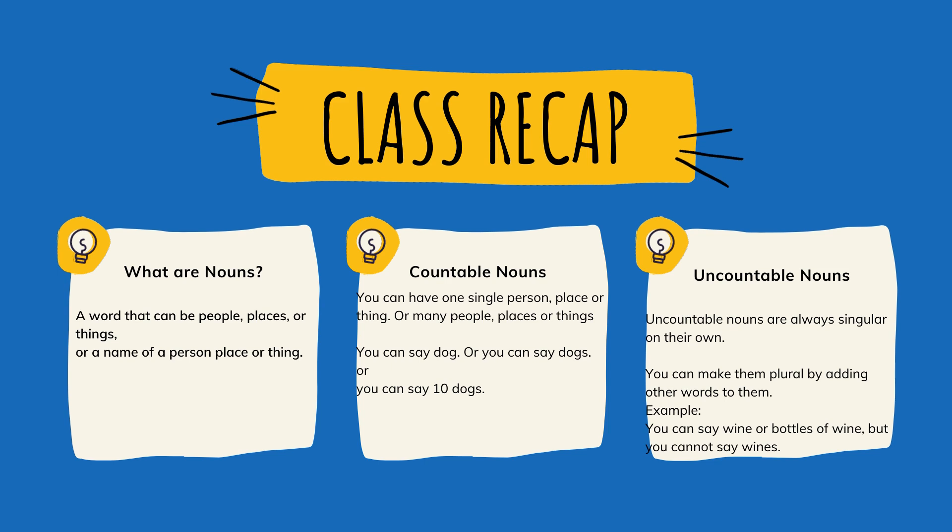Here's the class recap. What is a noun? A noun is a word that can be people, places, or things, or the name of a person, place, or thing. A noun can be a subject of a sentence or an object of a sentence. Countable nouns: you can have one single person, place, or thing, or many people, places, or things. Countable nouns can be singular or plural — you can say dog, dogs, or ten dogs. Uncountable nouns are always singular on their own. You can make them plural by adding words — for example, you could say wine, or bottles of wine, but you cannot say 'wines'. That's all for today's lesson. Looking forward to our next lesson together. Take care and have a great day.